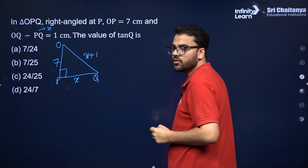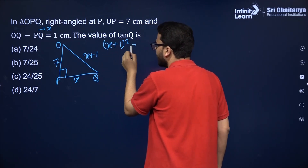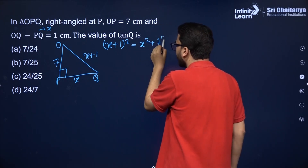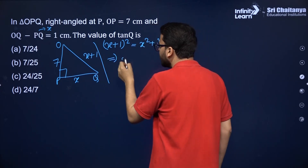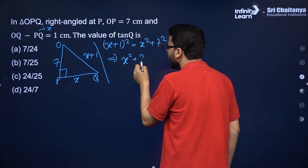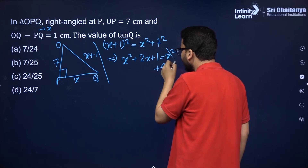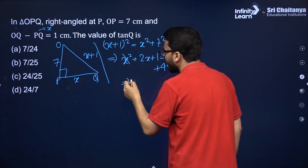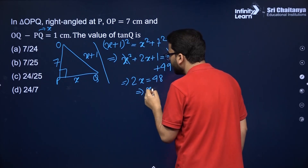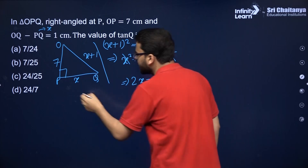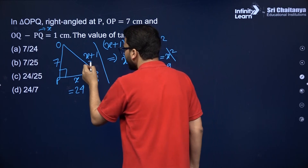Using the Pythagoras theorem: (X+1)² = X² + 7². Expanding, X² + 2X + 1 = X² + 49. The X² cancels out, giving 2X = 48, so X = 24. Therefore OQ = 24 + 1 = 25.